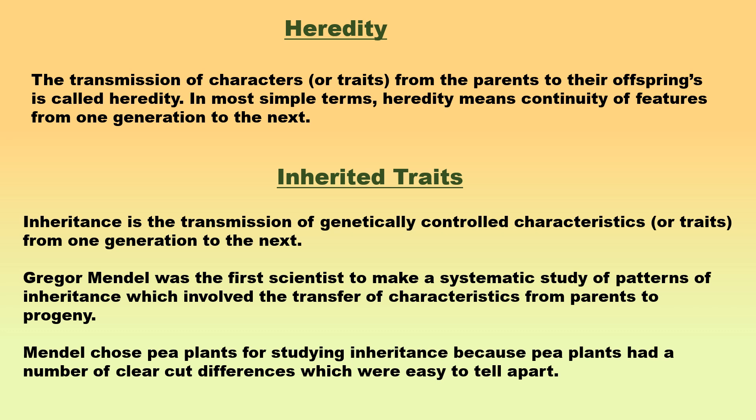The transmission of characters or traits from the parents to their offsprings is called heredity. In most simple terms, heredity means continuity of features from one generation to the next. Two parents, a male and a female, are involved in sexual reproduction. The sexually reproducing organisms produce sex cells or gametes. The male gamete called sperm fuses with a female gamete called ovum to form a zygote which gradually develops into a young one, or offspring, showing some similarities with the parents.